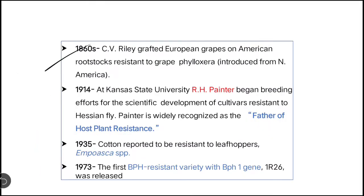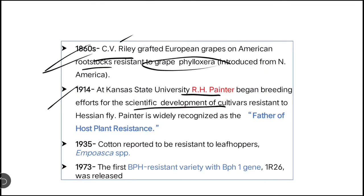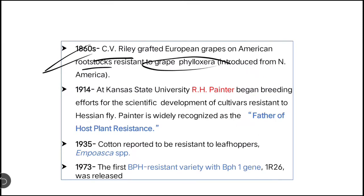In the year 1860, CV Relay grafted European grapes on American rootstock — the same concept. Then in the year 1914, at Kansas University, R.H. Painter began a breeding effort for the scientific development of cultivars resistant to the Hessian fly. Painter is widely recognized as the father of HPR. While the Underhill variety showed natural resistance, Painter started breeding other varieties to show resistance to the Hessian fly.